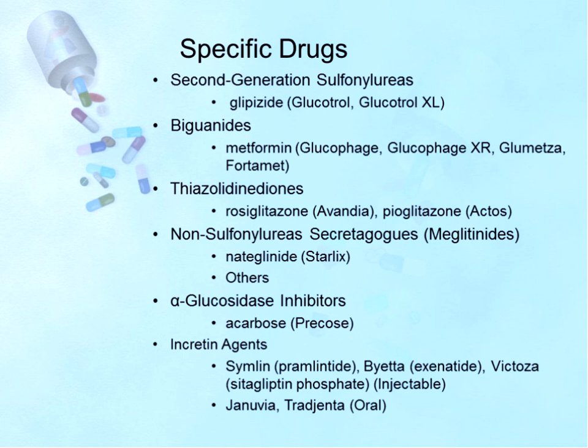Specific drugs in this category include the second-generation sulfonylureas such as glipizide (Glucotrol, Glucotrol XL), the biguanides such as metformin (Glucophage, Glucophage XR, Fortamet), the TZDs including Avandia and Actos, the non-sulfonylurea secretagogues such as Starlix, the alpha-glucosidase inhibitors such as Precose, and incretin agents such as Byetta.